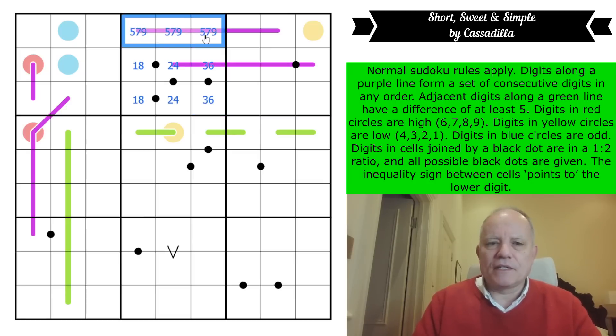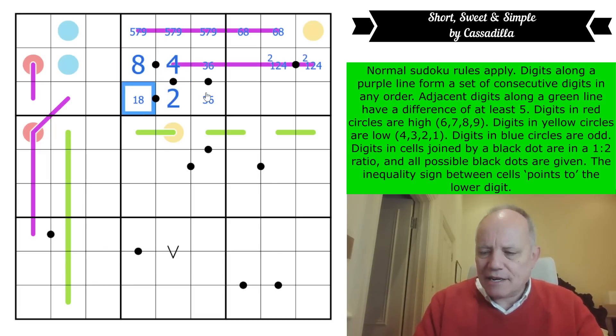Okay. And that leaves 5, 7, and 9 in the box. They're on a purple line. So, that is a line that contains a sequence, not necessarily in order. But I think that means this has to be a 6, 8 pair. And we've got a pretty big old start on this puzzle already. And it continues. This black dot can't have a 6 or an 8 on it. And you'll work out from the possible combinations. It's either 1, 2, or 2, 4. There is a 2 on the line, and now this cell can't be a 2 and must be a 4.